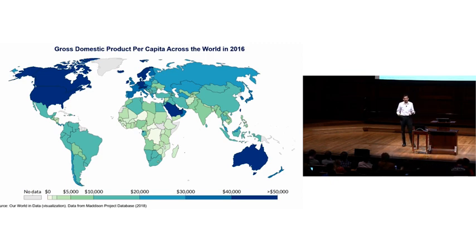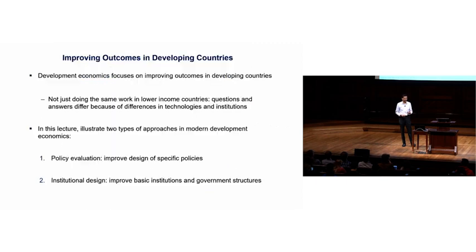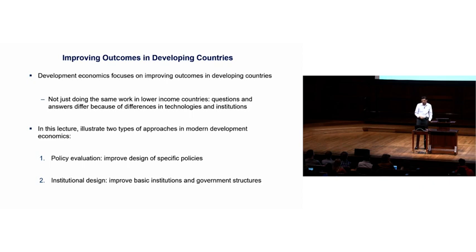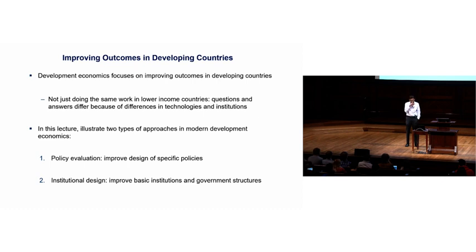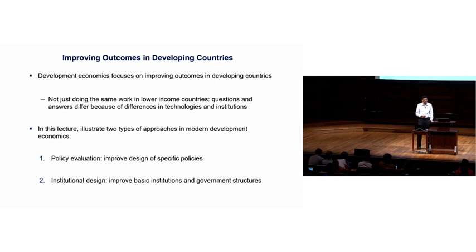There's a tremendous range in incomes per capita across the world. Countries like the United States and Western European countries have GDP per capita of $50,000 or higher, while countries in parts of Sub-Saharan Africa have GDP per capita 10 times lower — less than $5,000 a person, or even lower. Many people in the world are living on less than $1 or $2 per day.